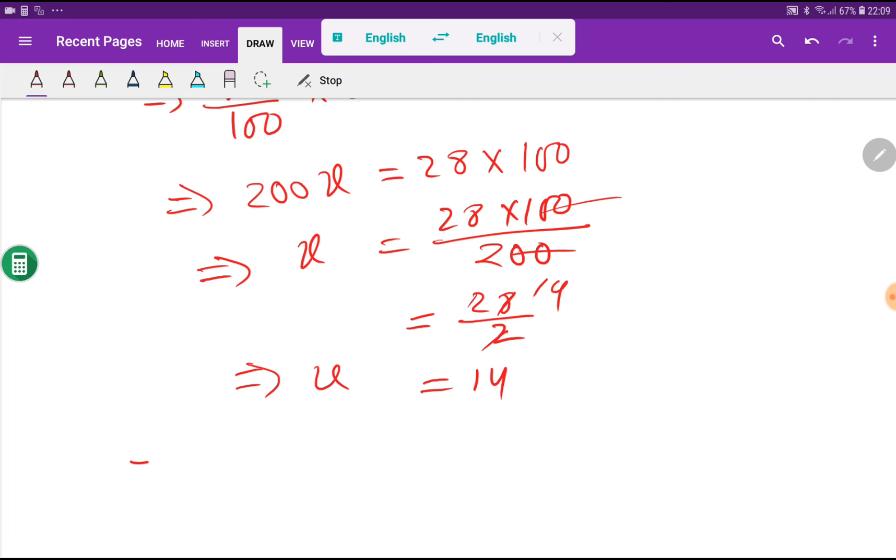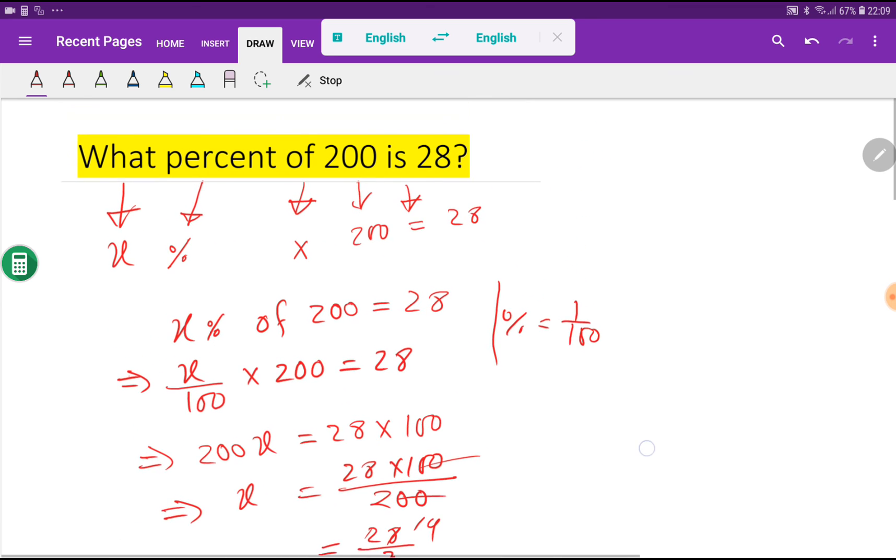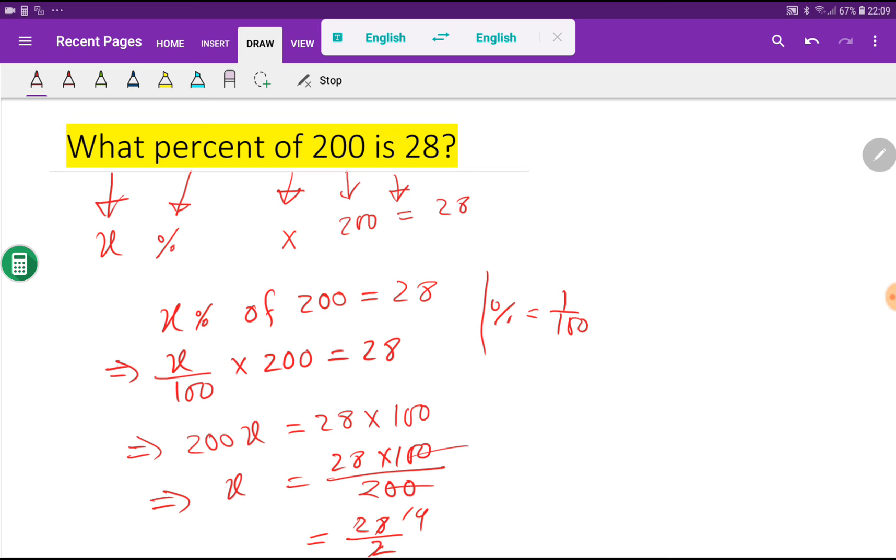So the answer is 14 percent. Then look at here, 14 percent of 200 is 28. So 14 percent, we are getting here 28.